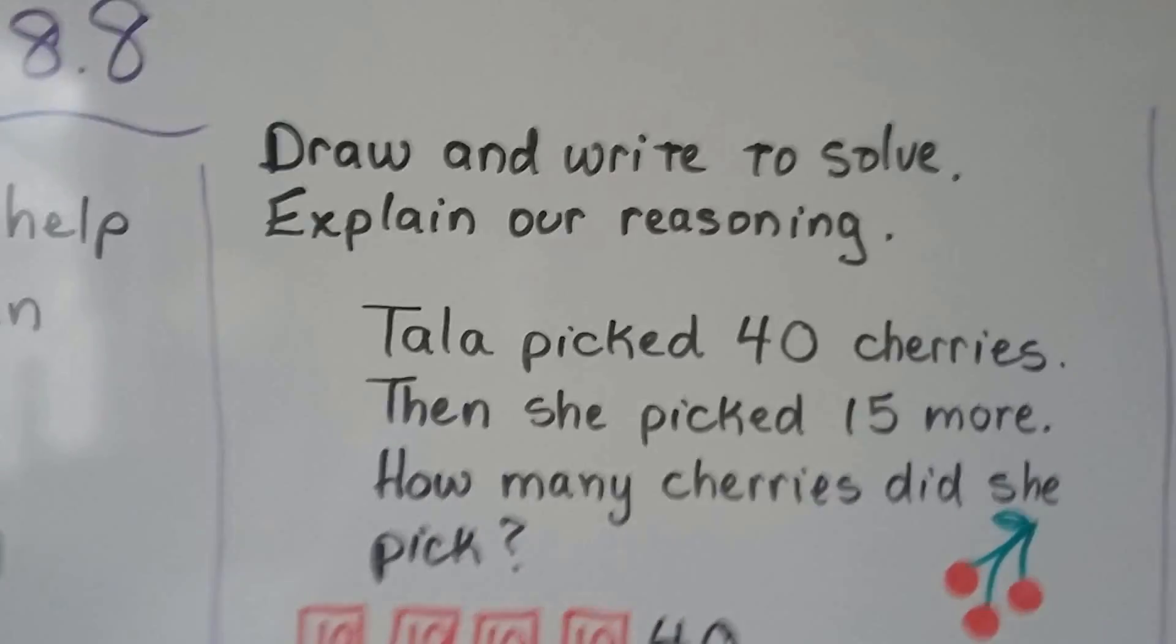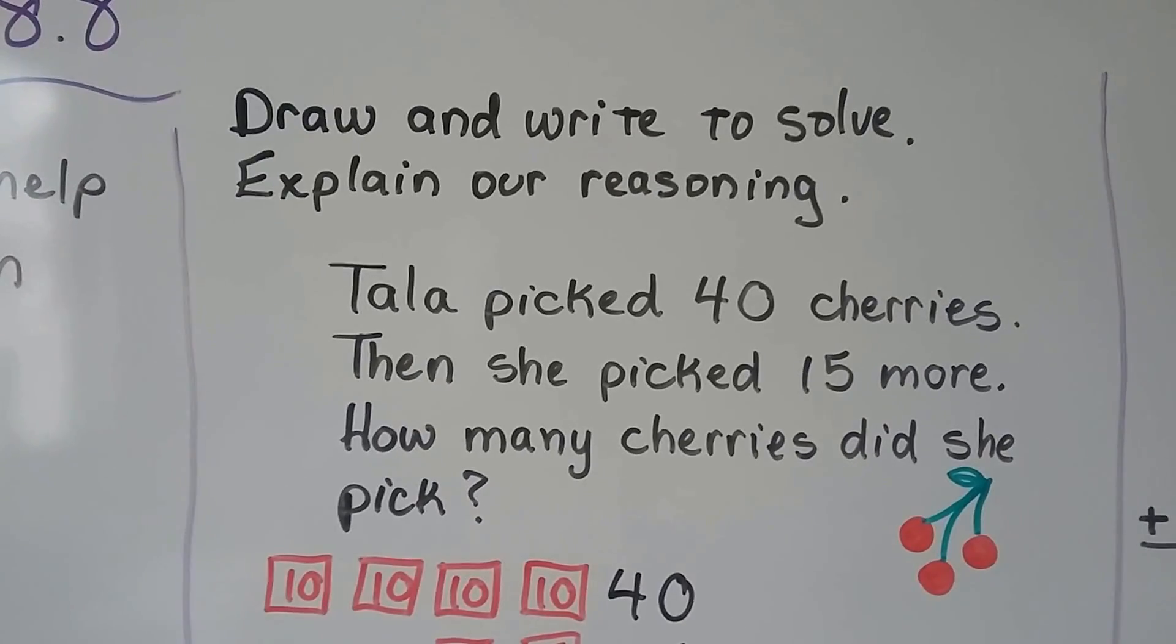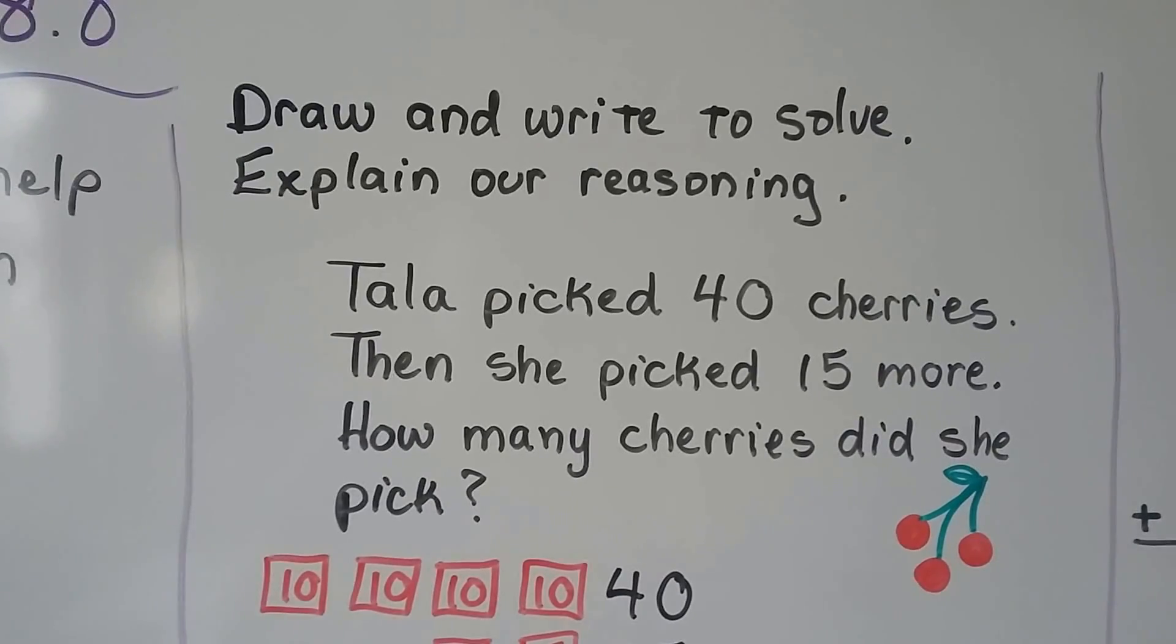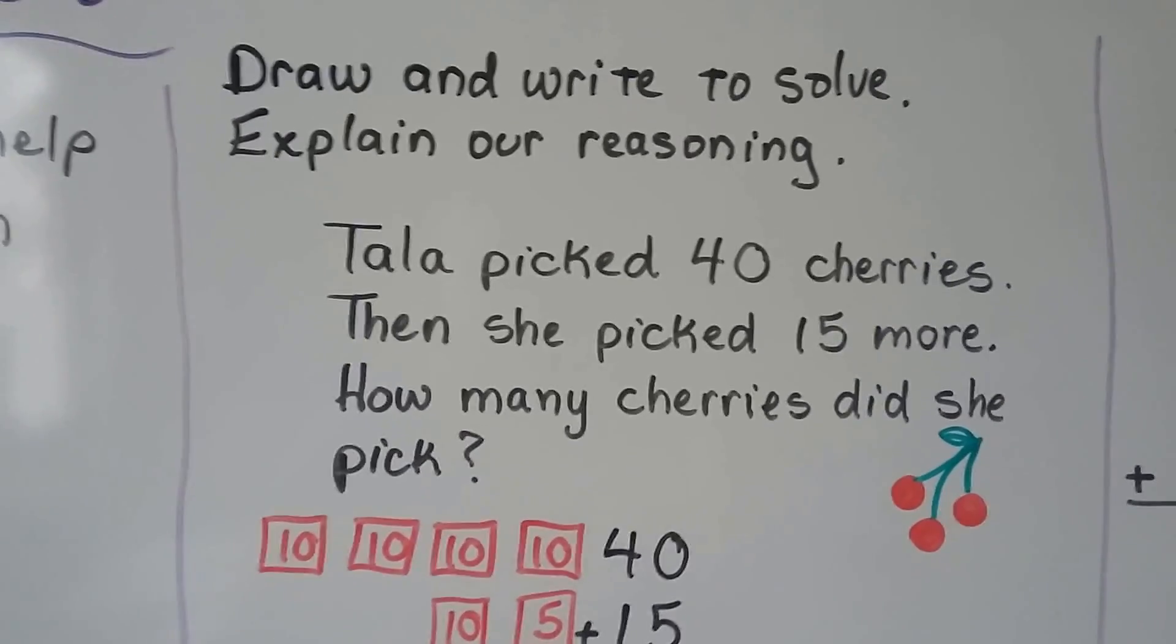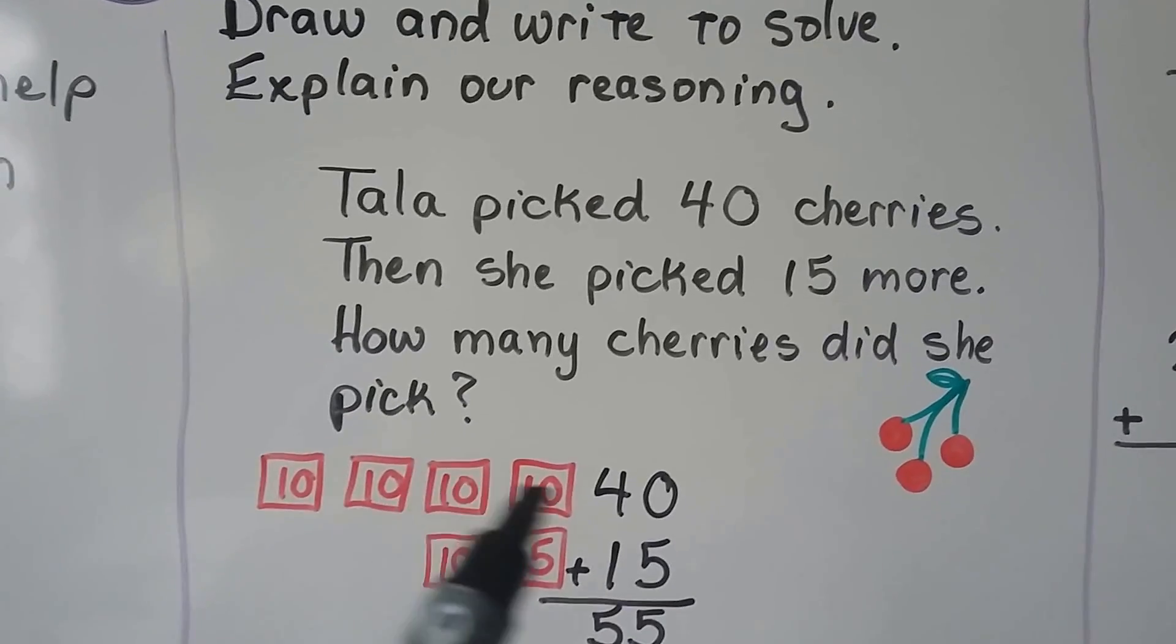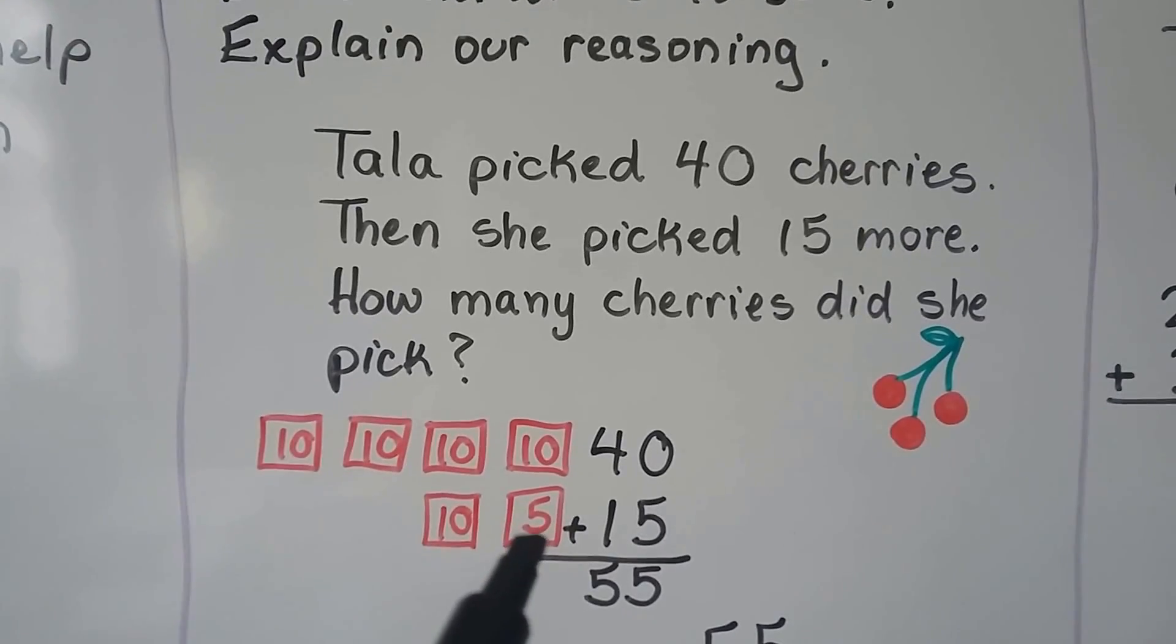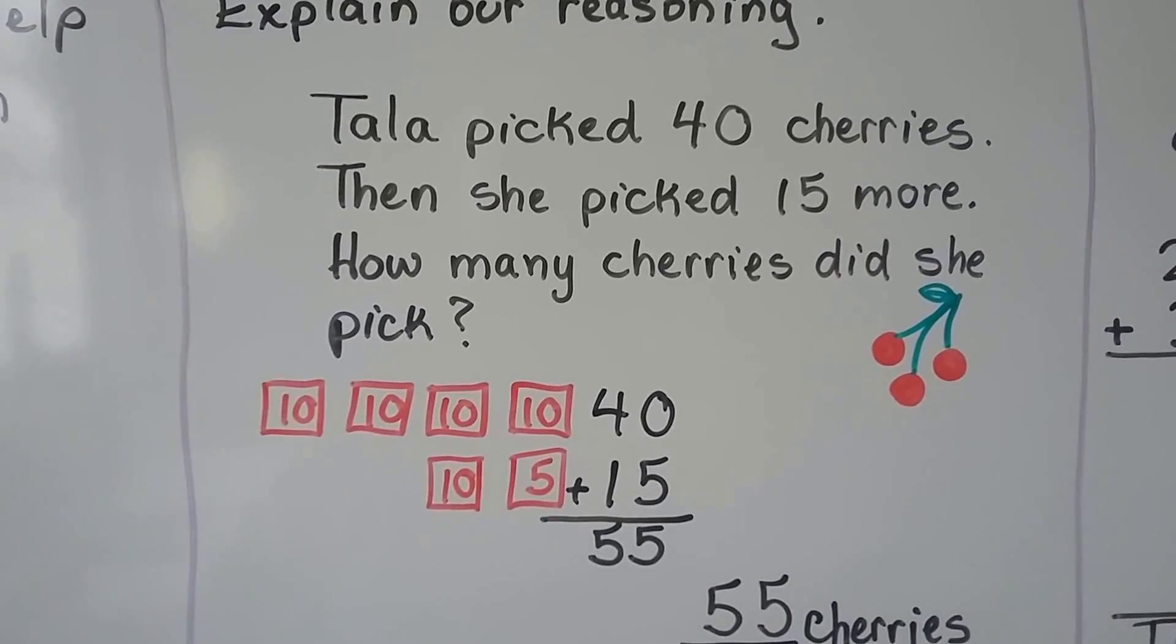We can draw and write to solve. We can explain our reasoning. Tala picked forty cherries. Then she picked fifteen more. How many cherries did she pick? We can make four tens for the forty cherries she picked. We can make a ten and a five for the fifteen more that she picked and we can add them together.